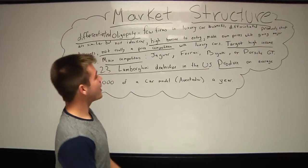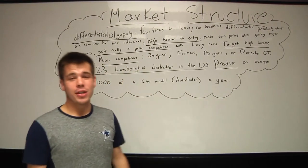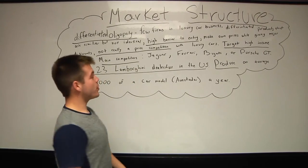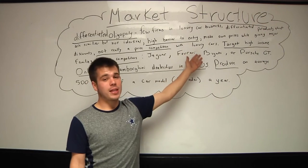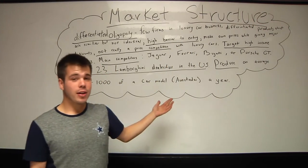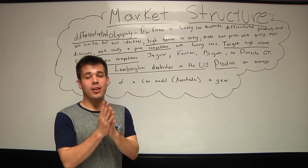What's up, guys? This is the Carby again. And I want to be talking to you guys about the market structure of Lamborghini. I would have to say that Lamborghini is a differentiated oligopoly, which is meaning there are very few firms in a car business, the luxury car business. And they have differentiated products that are similar, but they are not identical.